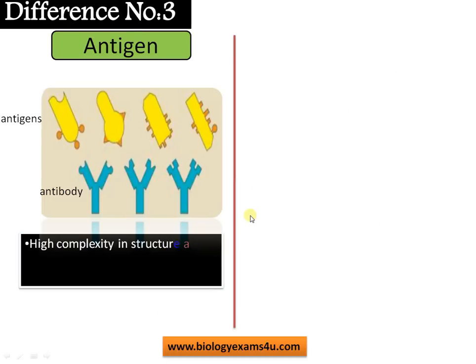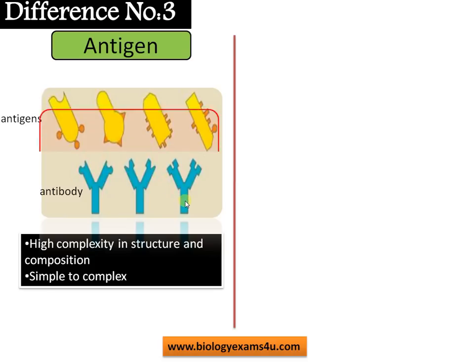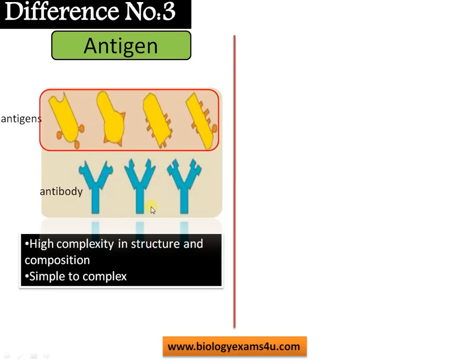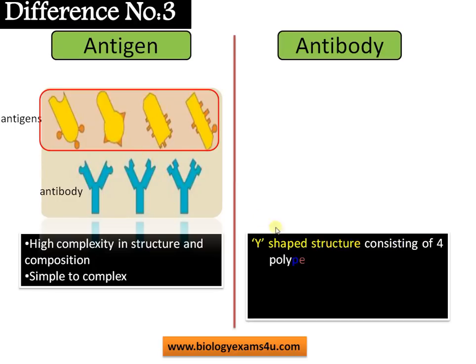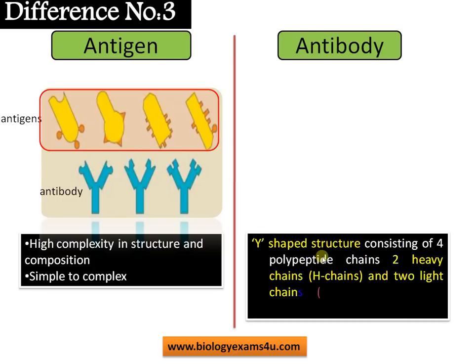Difference number three. Antigenic structure is highly complex in structure and composition — they differ greatly. It may be simple to complex. Different antigens have different shapes, different molecular weights, and different immunogenicity. Each antigen will interact with a specific antibody, and this interaction is highly specific. In the case of antibodies, individual units are Y-shaped structures consisting of four polypeptide chains — two heavy chains and two light chains joined by disulfide bonds.